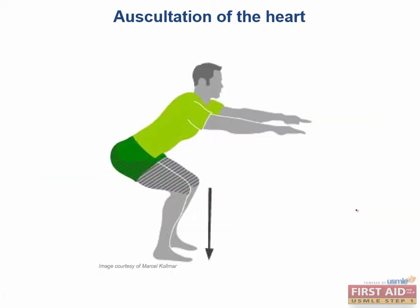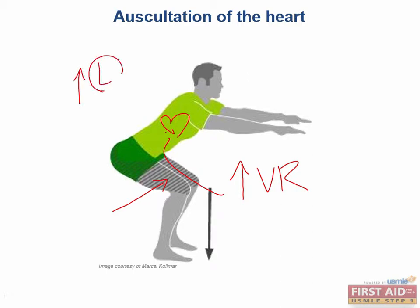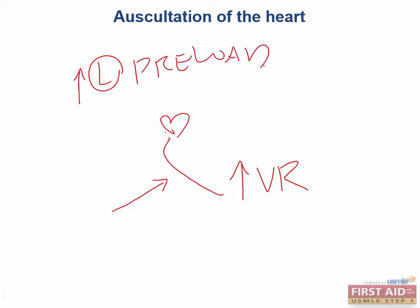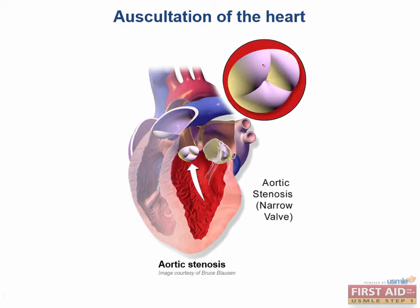What about squatting? Hitting a squat compresses the veins in the legs — it's like squeezing a container of toothpaste — so we increase venous return and send more blood back to the heart. We did not alter the pulmonary vasculature compliance like we did in inspiration. So this increased venous return will also send more blood to both the right and the left side of the heart, increasing left-sided preload as well. More blood in the left ventricle leads to increased flow over the stenotic cusps in aortic stenosis, creating a louder murmur.